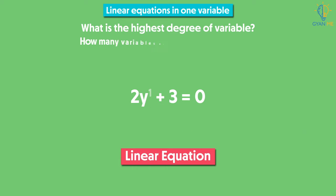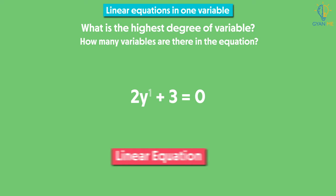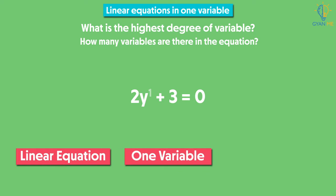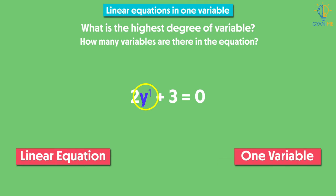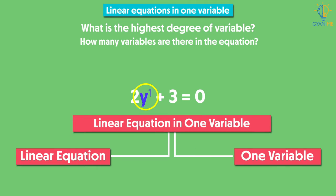How many variables are there in the equation? There is only one variable in the equation, that is y. So, the given equation is a linear equation in one variable.